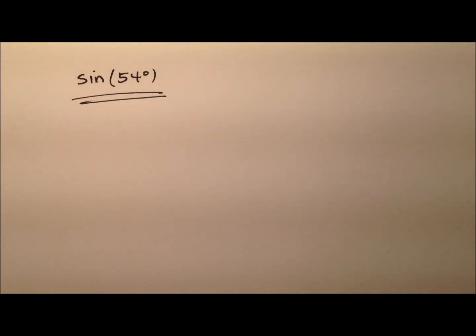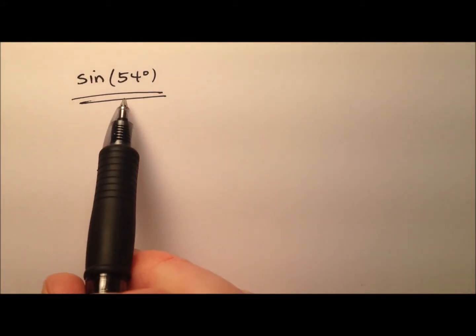In this video, I want to take a look at one way that we can find the exact value for the sine of 54 degrees. Now there's lots of ways to do this, geometric ways and algebraic ways. I'm going to take an algebraic approach in this case.